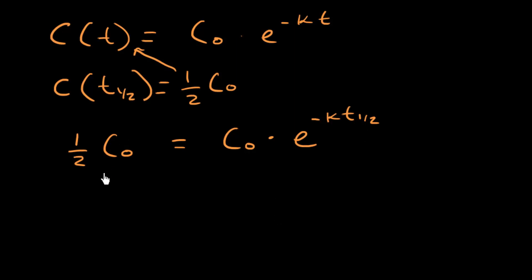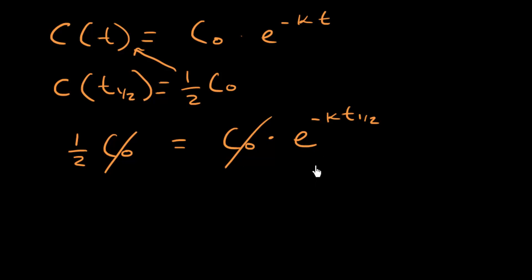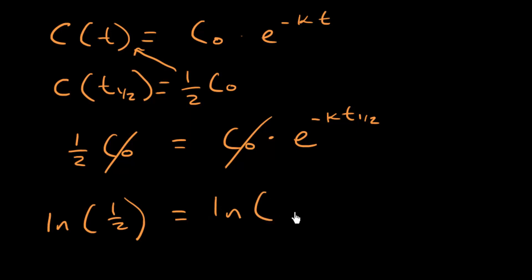The concentration cancels out, which confirms that with first order elimination, a constant proportion of drug is eliminated per time, independent of concentration. To solve for the half-life, we take the natural log of both sides: ln(1/2) on the left, and ln of e raised to the negative k times t one-half on the right.